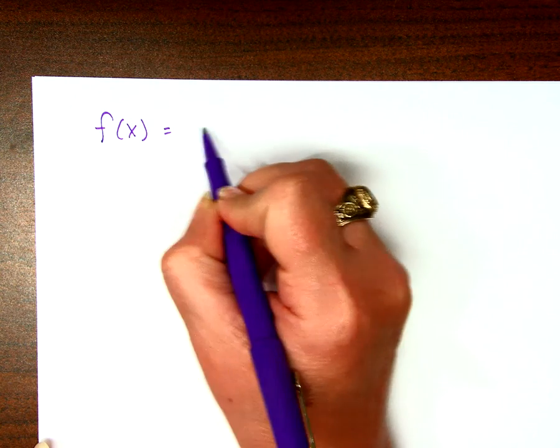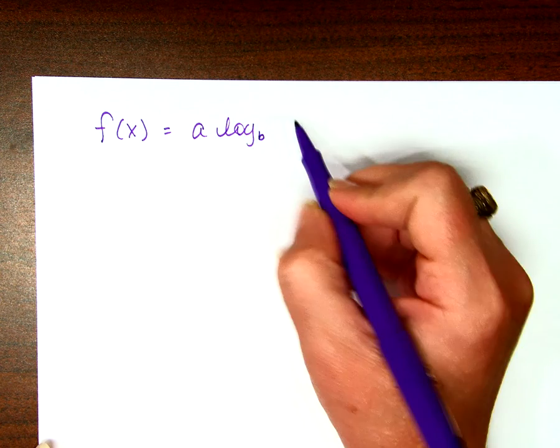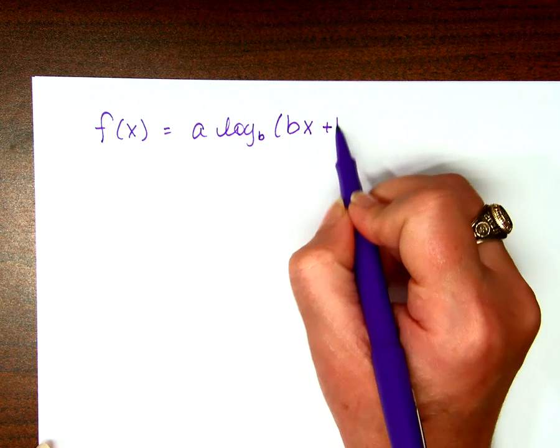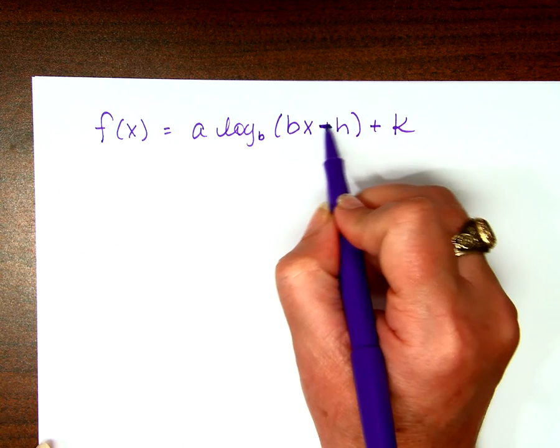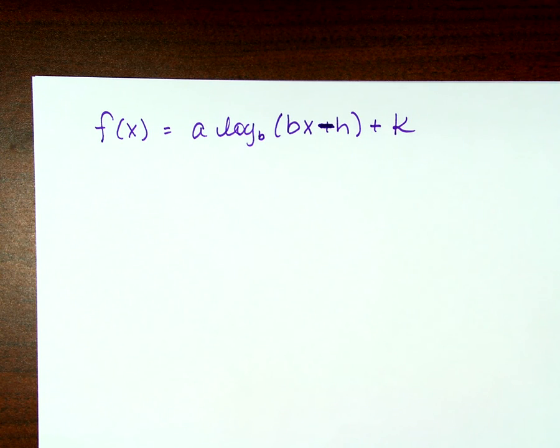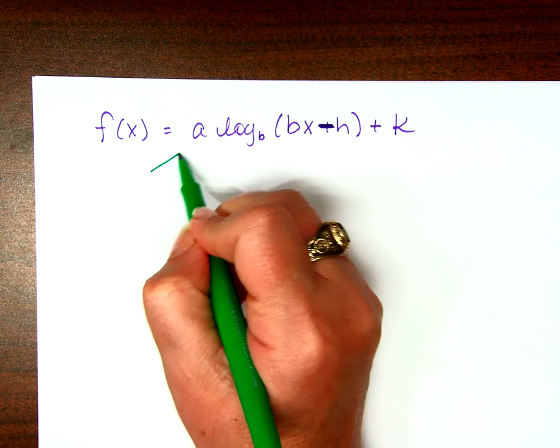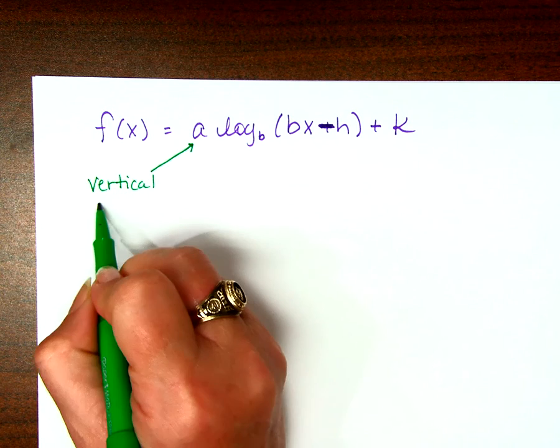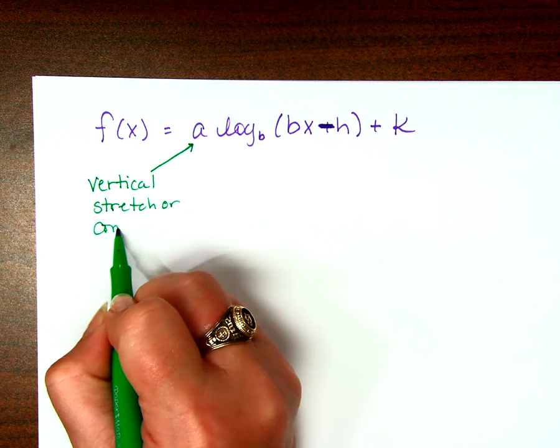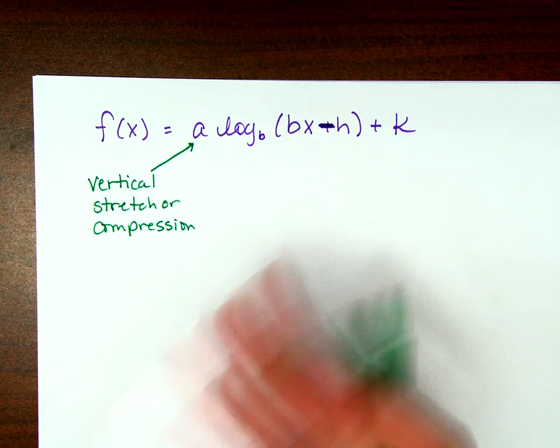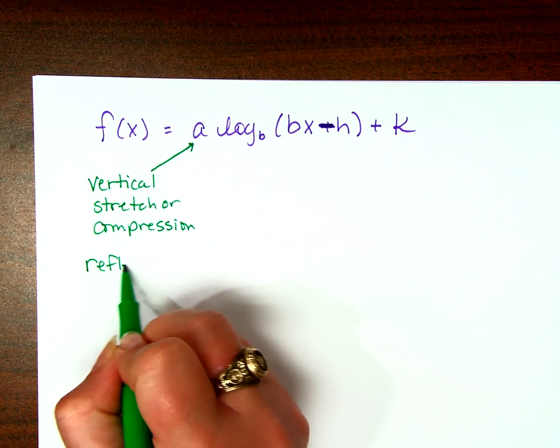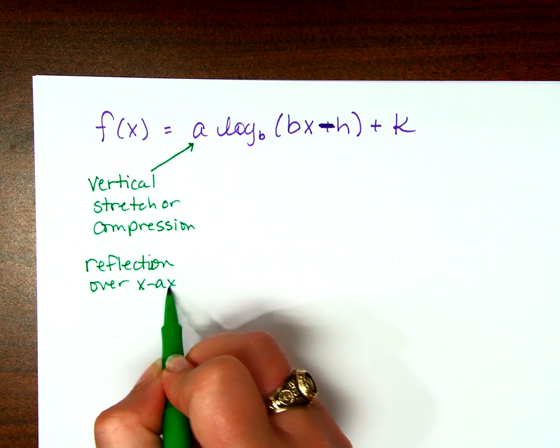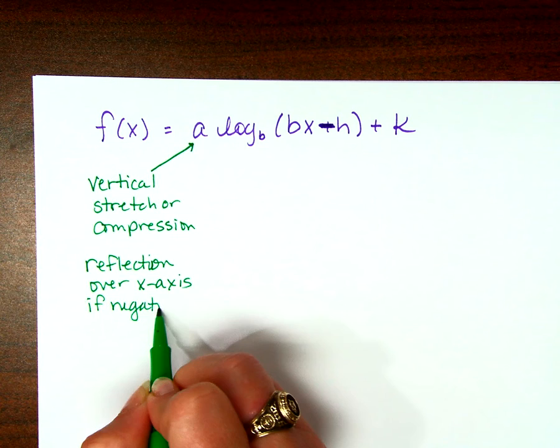Let's talk about graphing logarithms real quick. I don't think you'll have any problem with graphing logarithms. Because when we talk about graphing logarithms, we're talking about transformations. f(x) = a log base b of (bx + h) + k. That should be minus h. Can you fix that please? Minus h, x minus h.